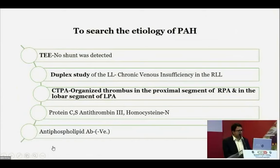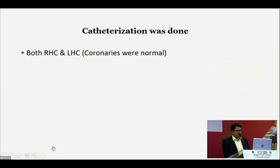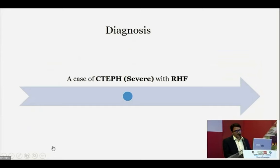To find the etiology of pulmonary hypertension, several investigations were performed: TEE detected no shunt anomaly; lower limb duplex showed chronic venous insufficiency of the right lower limb. CT pulmonary angiography showed organized thrombus in the proximal segment of the right pulmonary artery and the lower segment of the left pulmonary artery. Thrombophilia screening showed no evidence of thrombophilia. Right and left heart catheterization showed markedly raised PVR with normal coronaries. Diagnosis: chronic thromboembolic pulmonary hypertension (CTEPH) with right heart failure.